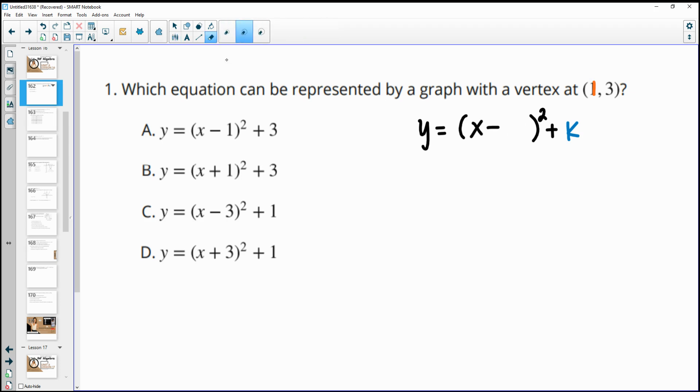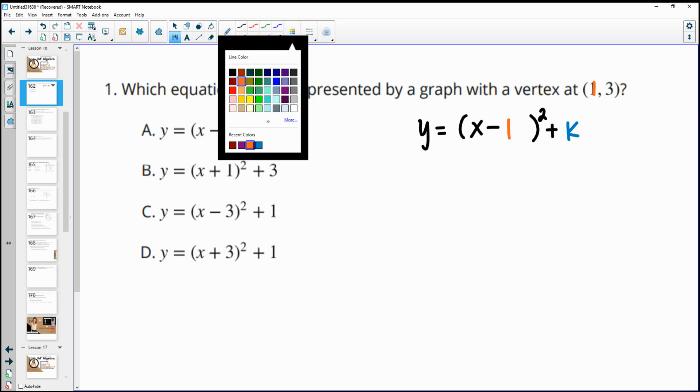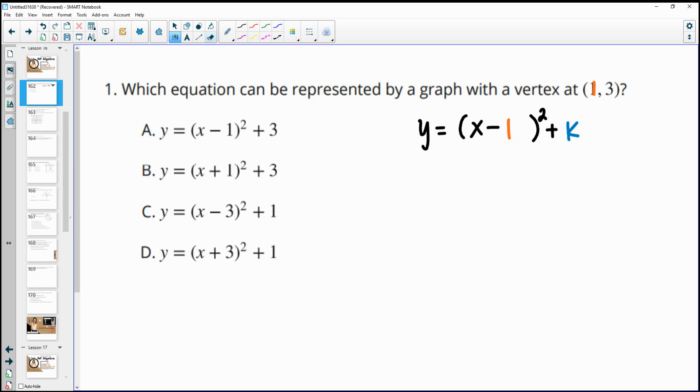So if instead of this h, I put a 1. And then we have our k is our y value. So instead of k, we would put 3. Then this would be the equation that we have. And we can see that that is option A.